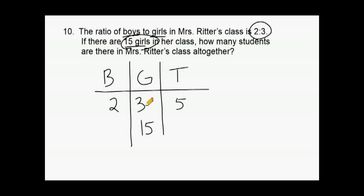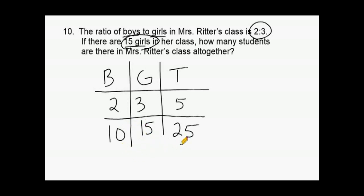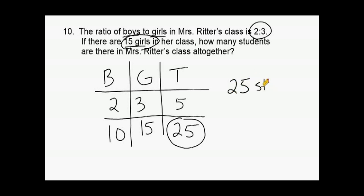Because 3 was multiplied by 5, we multiply 2 by 5 to get 10 boys, and 5 by 5 to get a total of 25. The two parts — 10 boys plus 15 girls — do equal 25. The problem asks for the total number of students, so there are 25 students altogether in Mrs. Ritter's class.